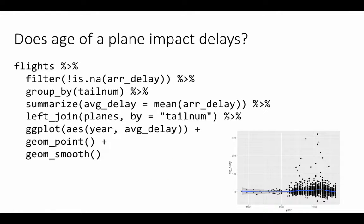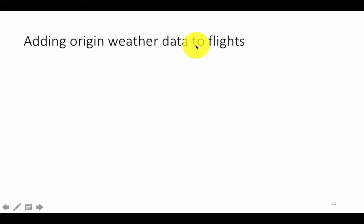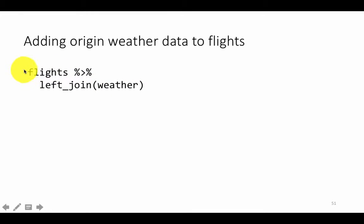Let's look at one more aspect. Till now, we've been joining tables only by a single field. We haven't had situations where we joined tables by multiple fields — let's look at that. Let's say we want to add the origin weather data to the flights — the weather information at the time of scheduled departure. We could do flights left join weather, or even flights inner join weather, which might be better because it will leave out situations where there is no weather information.